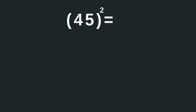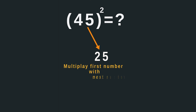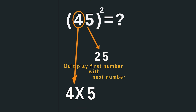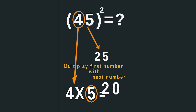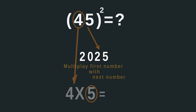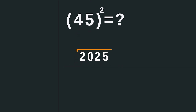Now 45. Since this number is ending in 5, we can square the last digit, which is 25. Then multiply the first digit with its next digit. Here our first digit is 4 and the next digit is 5. So multiply 4 with 5, which equals 20. Now piece the answers together to get your answer, so 45 squared is equal to 2025.